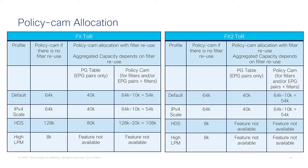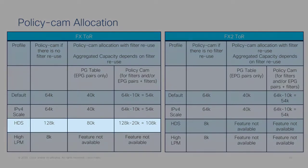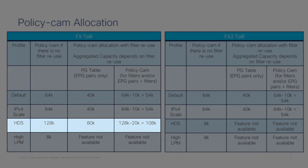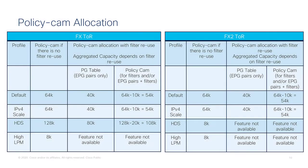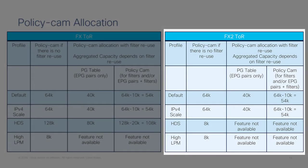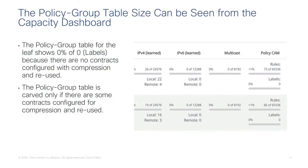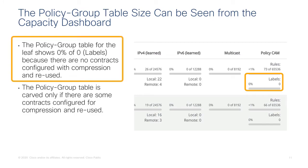So 54k entries are available for filters pointed to by EPG pairs, or for classic EPG-to-EPG filter entries. For the HDS profile, the policy group table is quite large — 80k entries, meaning 80k EPG pairs — and filters can be stored in a table of 108k entries. These are the profiles for FX2 leaves and how the compression feature allocates the tables. You can check policy cam utilization in the operational tab capacity dashboard, and you can also see how many labels have been allocated.